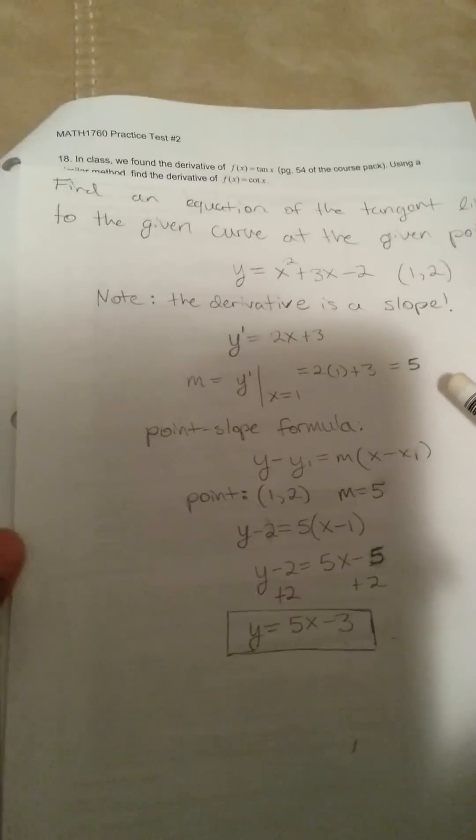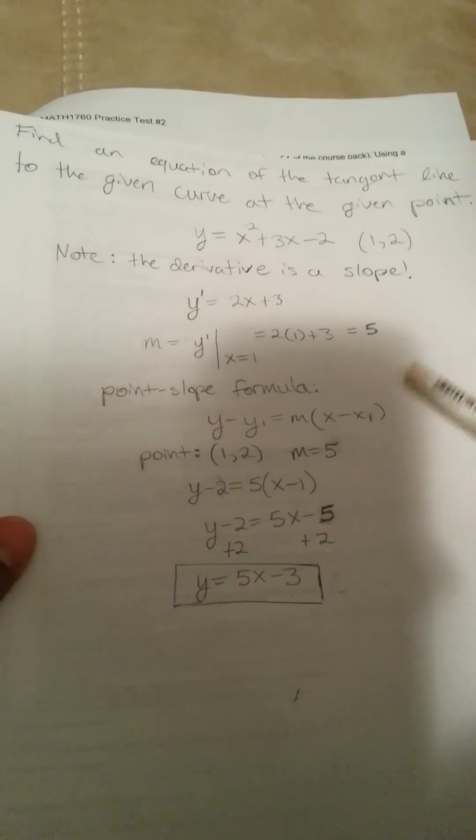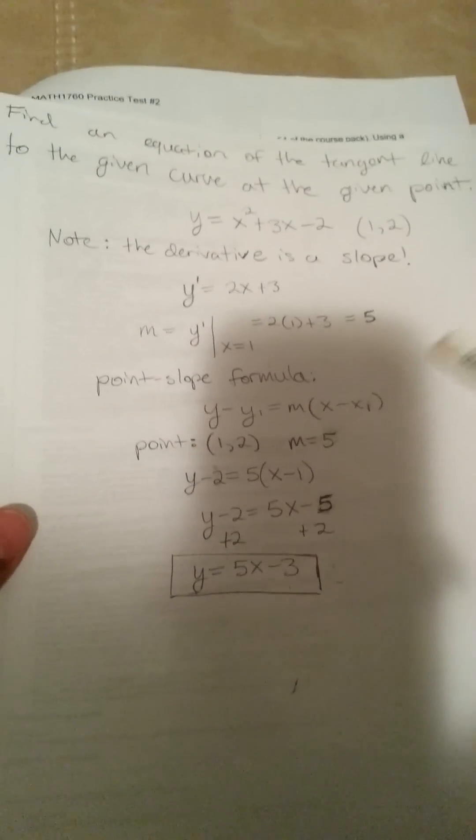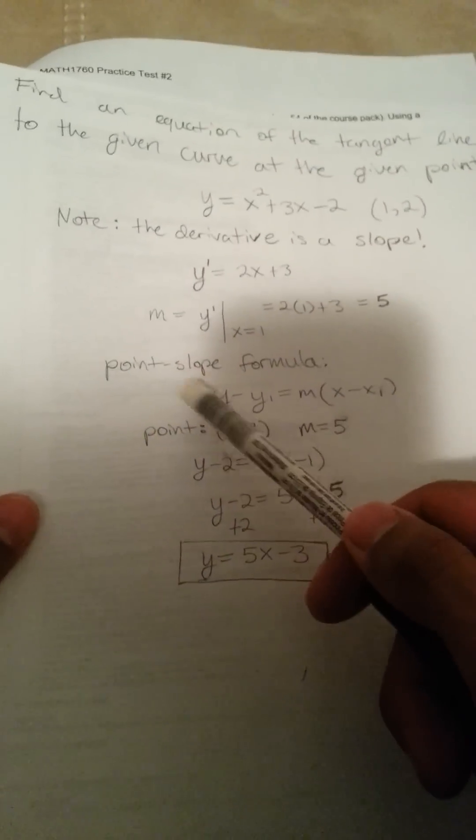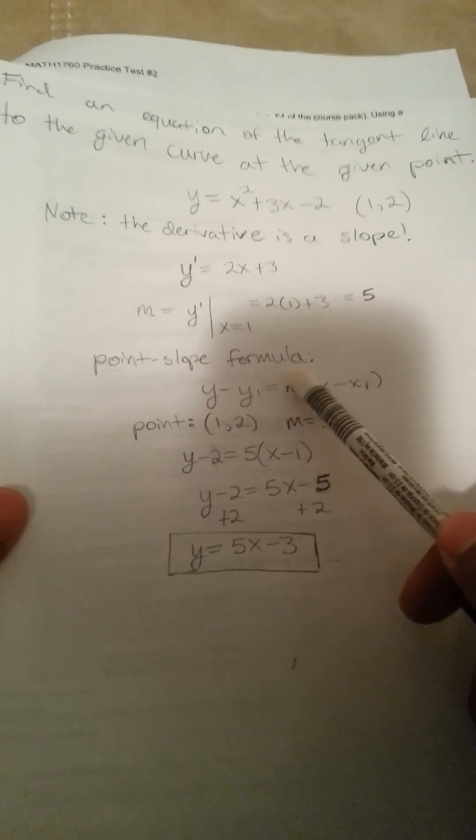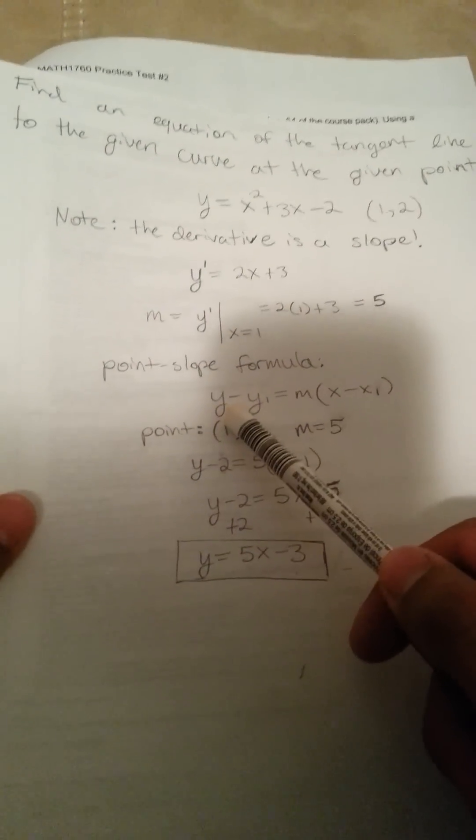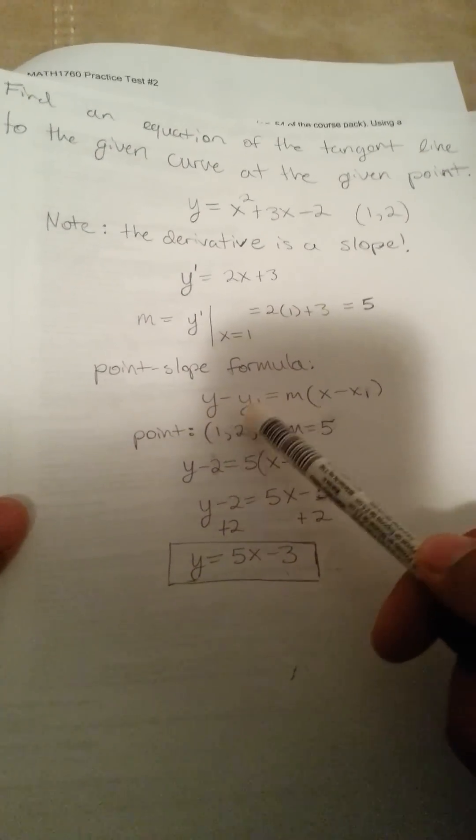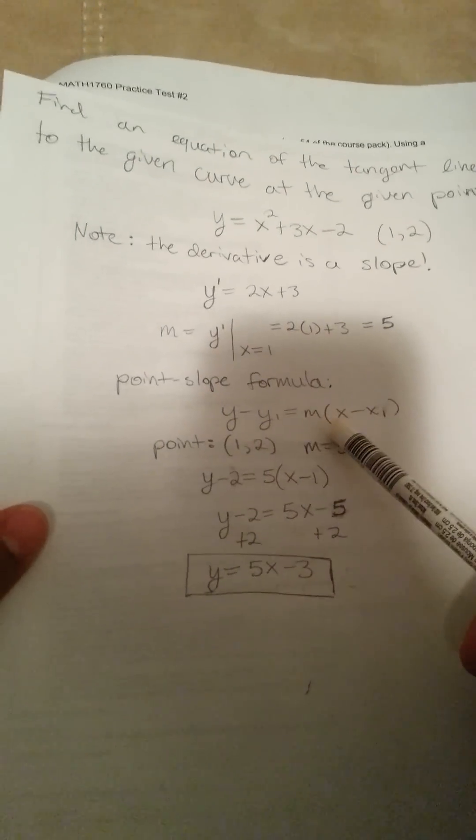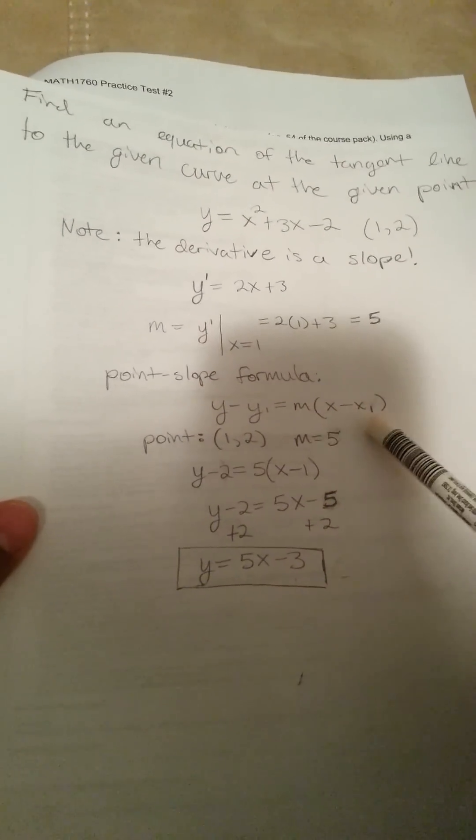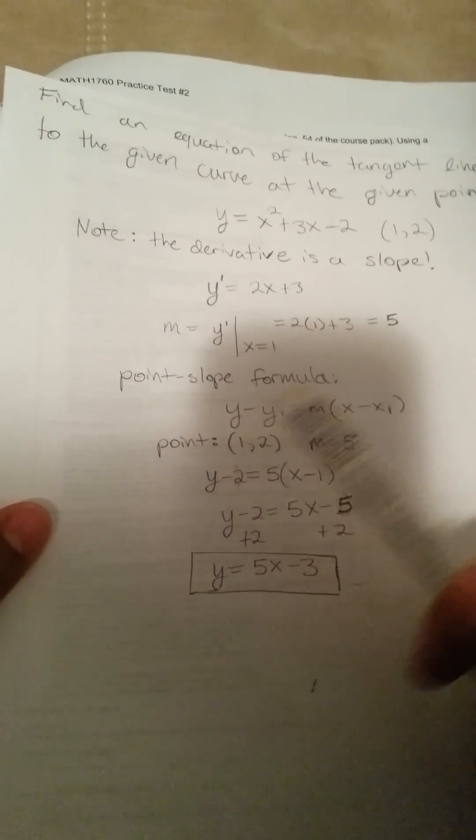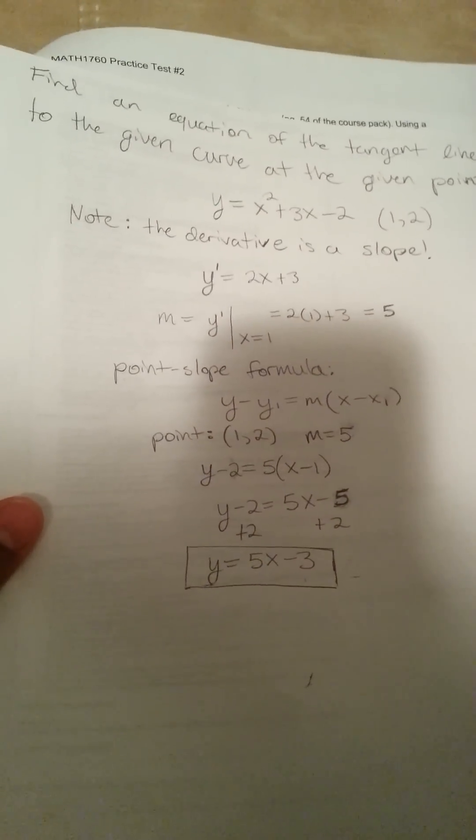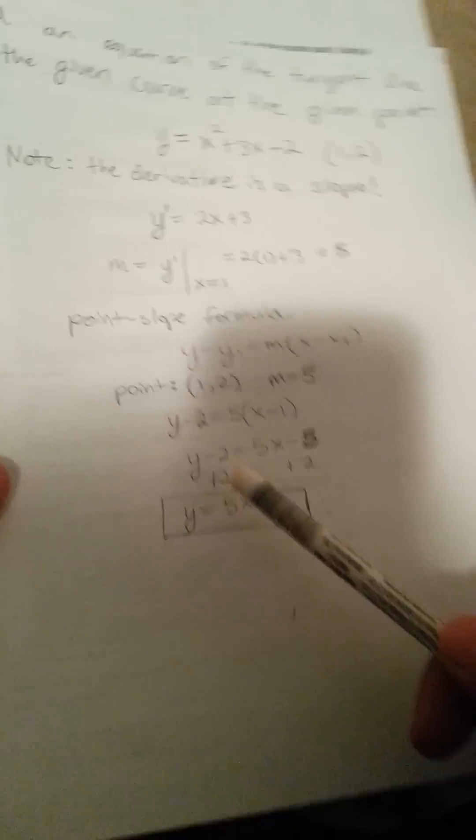Now what we need to do is just some basic algebra we've been using for a while now, and this involves the point slope formula. It's here shown as y minus y1 equals m times x minus x1. Now, we have our point, and we have our slope. So, all we have to do is plug in all the info we have.